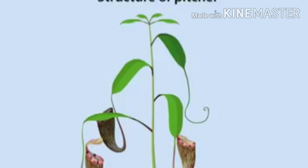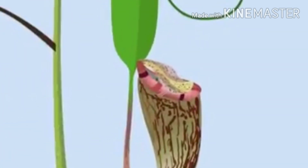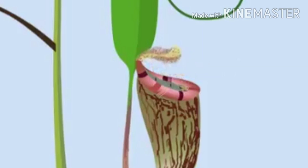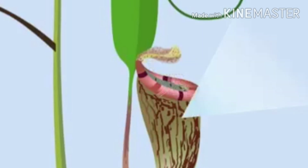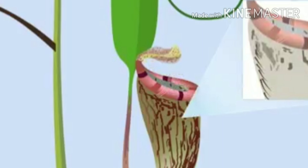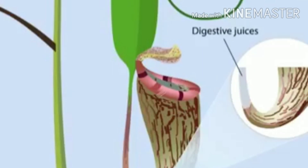In this picture, the tip of the leaf is modified into a pitcher-like structure. This pitcher has a lid which can open and close, and the mouth or rim of the pitcher is very colorful. Inside there are sticky hairs and digestive juice.